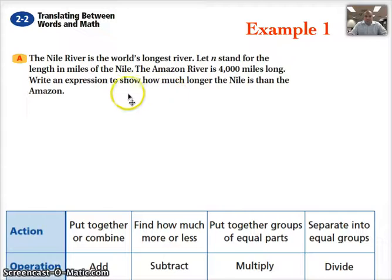Here the first example reads: the Nile River is the world's longest river. Let N stand for the length in miles of the Nile. The Amazon River is 4,000 miles long. Write an expression to show how much longer the Nile is than the Amazon. Here we have how much longer the Nile is, and we're going to refer back to that here pretty soon.